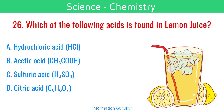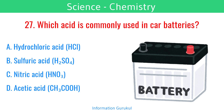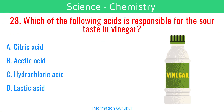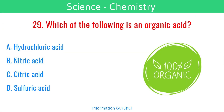Which of the following acids is found in lemon juice? Citric acid. Which acid is commonly used in car batteries? Sulfuric acid. Which of the following acids is responsible for the sour taste in vinegar? Acetic acid. Which of the following is an organic acid? Citric acid.